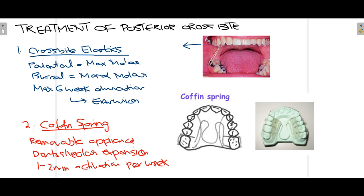Now moving towards correction of posterior crossbite. The first appliance that can be used is a crossbite elastic. One end of the elastic is inserted at the palatal end of the maxillary molar and the other end at the buccal surface of the mandibular molar. This exerts a buccal force, moving the teeth in a buccal direction to help correct the crossbite. The maximum duration this appliance should be used is 60 days, as longer use can cause extrusion which would be detrimental.